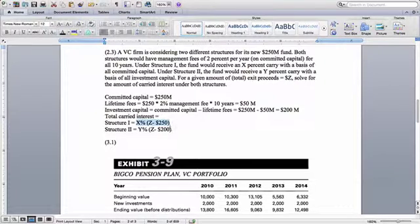Structure two, we're using the investment capital. Two is Y percent times Z minus 200.